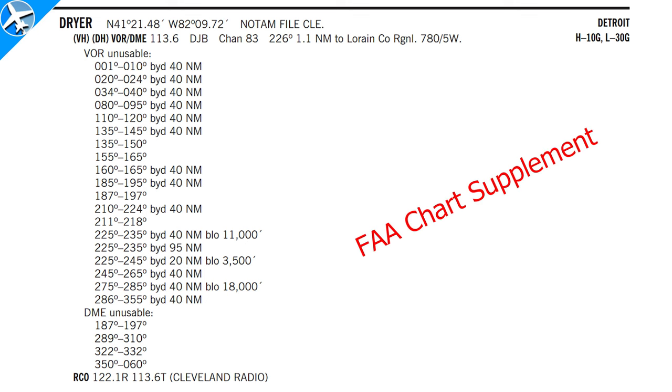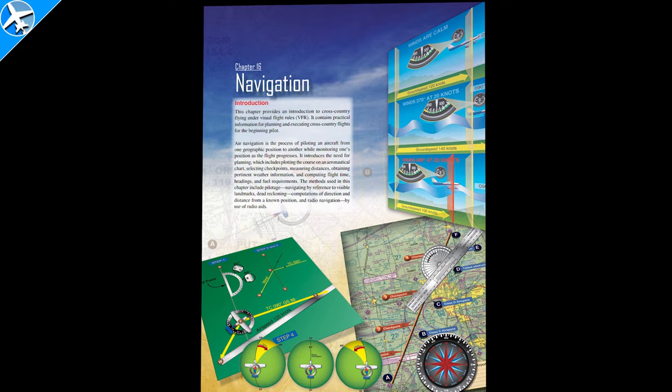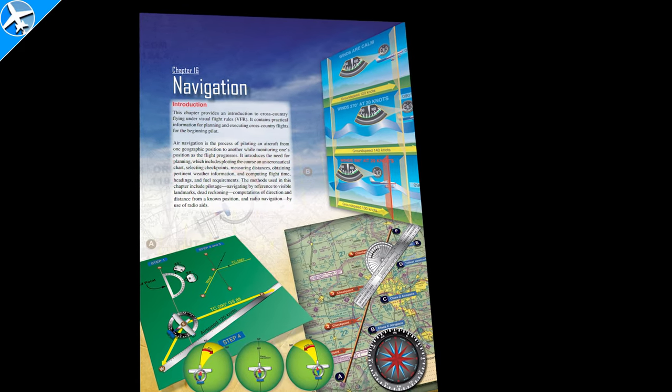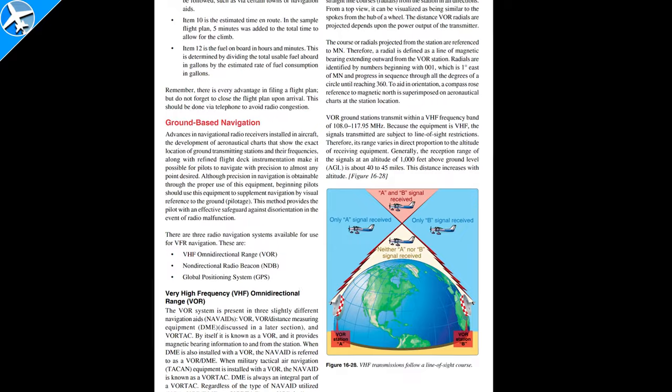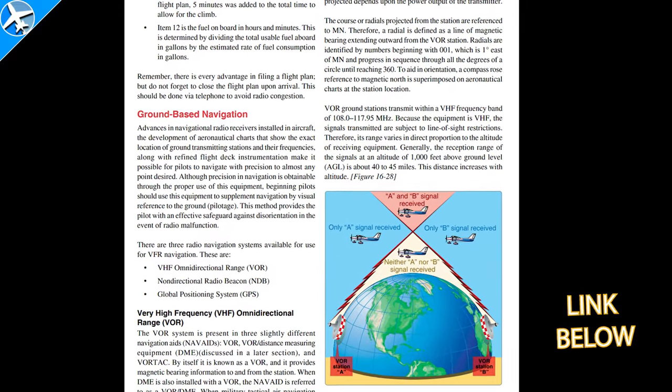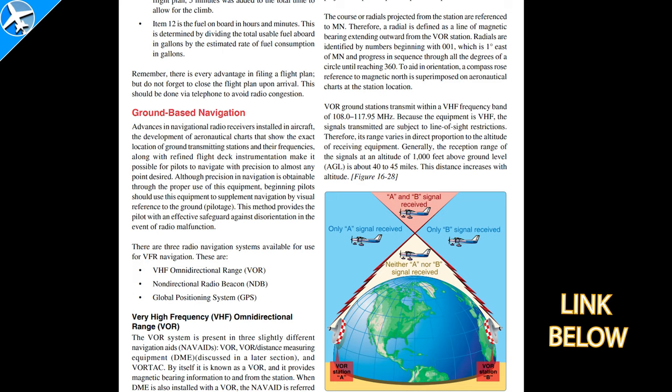The FAA chart supplement has more information on a particular VOR. This video's purpose was to show how to use a VOR — types of VORs and service volumes were not covered. Chapter 16 of the Pilot's Handbook of Aeronautical Knowledge has more information on ground-based navigation, and it's a free resource online. MON stands for Minimum Operational Network, meaning VORs are being phased out but a minimum network will remain to ensure aircraft without GPS can still navigate, and all aircraft have a backup form of navigation in the event of GPS failure.